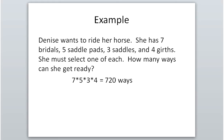Another sample space example: Denise wants to ride her horse. She has 7 bridles, 5 saddle pads, 3 saddles, and 4 girths. To find the total number of combinations, multiply 7 × 5 × 3 × 4 = 720 ways. This is an example where you wouldn't want to list all 720 possibilities — you just need to know how many there are.